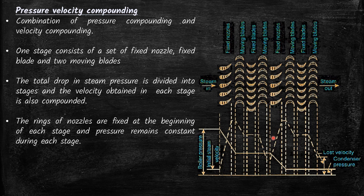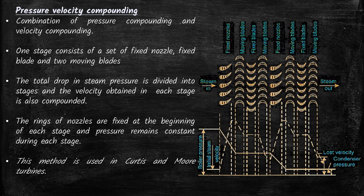The rings of nozzles are fixed at the beginning of each stage, and the pressure remains constant during each stage — that is, the pressure drops only in the nozzle. As the steam moves through the turbine stages, the pressure remains constant. This method is used in Curtis and Maury turbines.